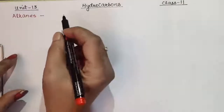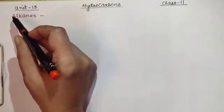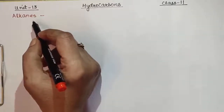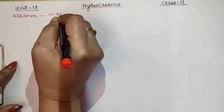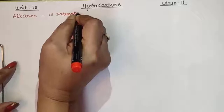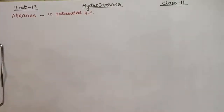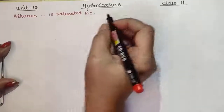Hello students, this is lecture number two of the hydrocarbons chapter and today we will discuss the first group or the first class of hydrocarbons, and that is alkanes. Alkanes are saturated hydrocarbons, meaning the carbon's tetravalency will be satisfied by all single bonds. There will be no double bond or triple bond, no unsaturation. So alkanes are saturated hydrocarbons.